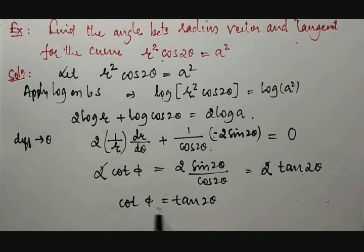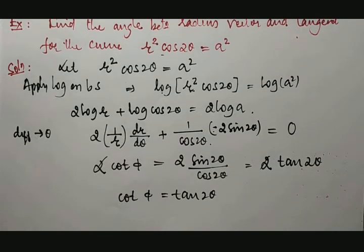It is not possible to cancel them. Then what to do? This tan 2θ has to be converted into cot. So see the ASTC rule.